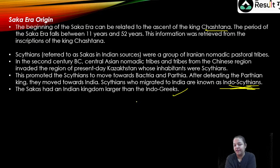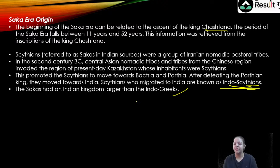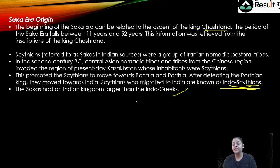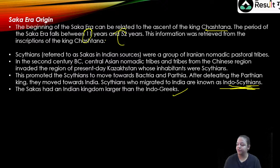The Shaka Era — the beginning of the Shaka Era is related to the ascent of King Chahatstana. The period of the Shaka Era falls between 11 years and 52 years. This information has been retrieved from the inscription of Chahatstana. With the decline of the Mauryan Empire, we see the rise of various other empires, and the Shaka Era begins with the ascent of King Chahatstana, which we know through an inscription.